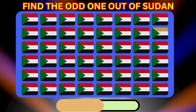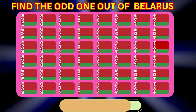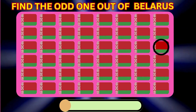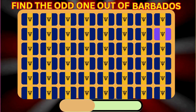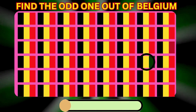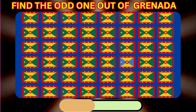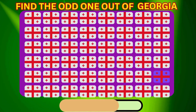Find the Odd One Out of Sudan. Find the Odd One Out of Grenada. Find the Odd One Out of Belgium. Find the Odd One Out of Grenada. Find the Odd One Out of Georgia.